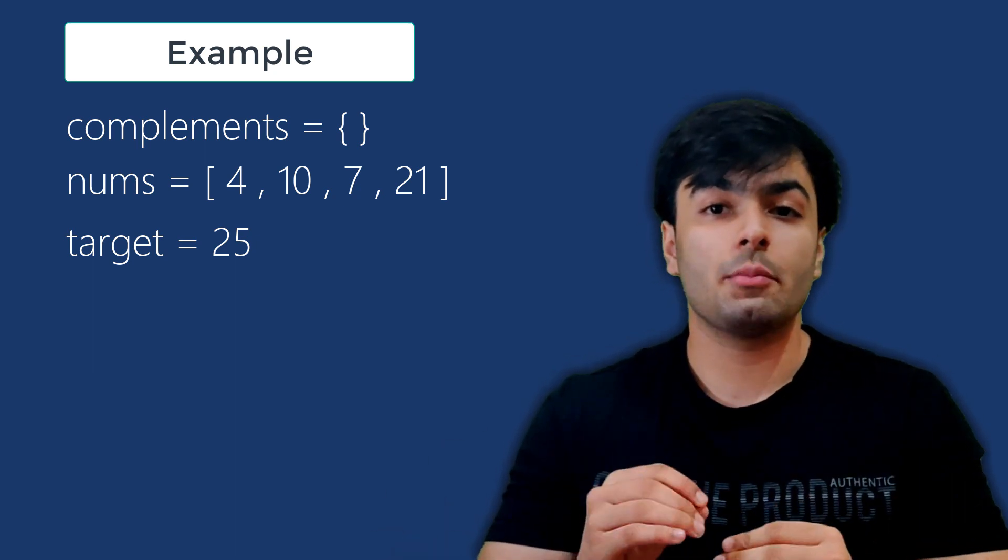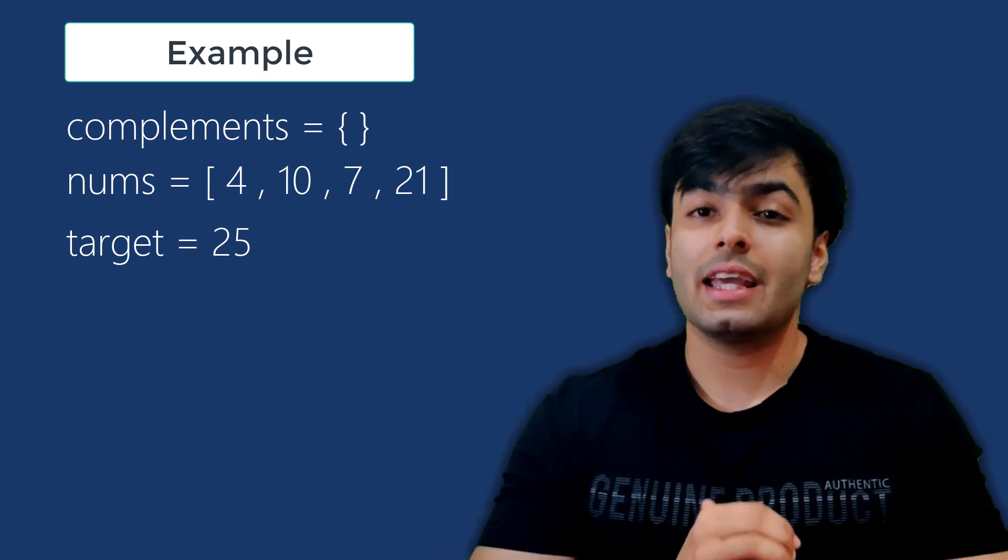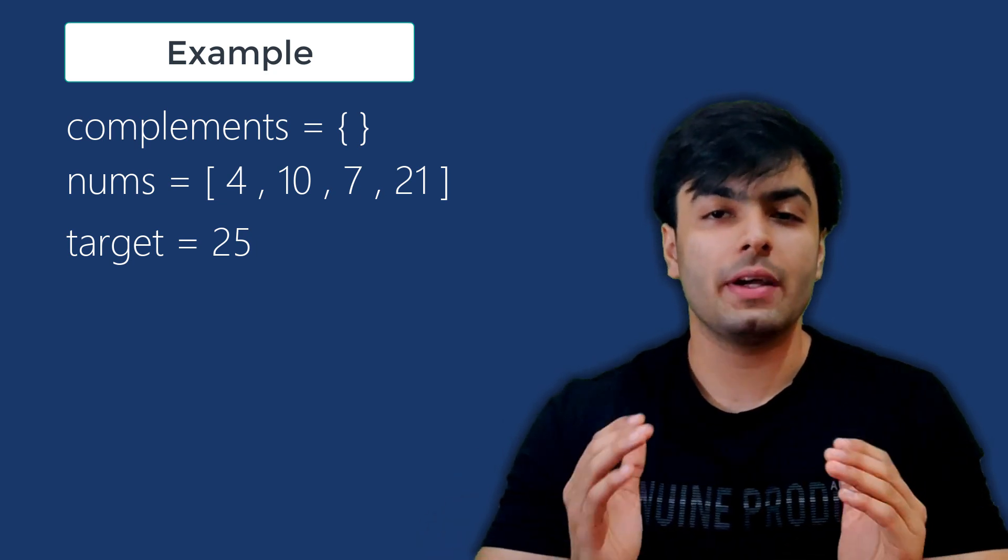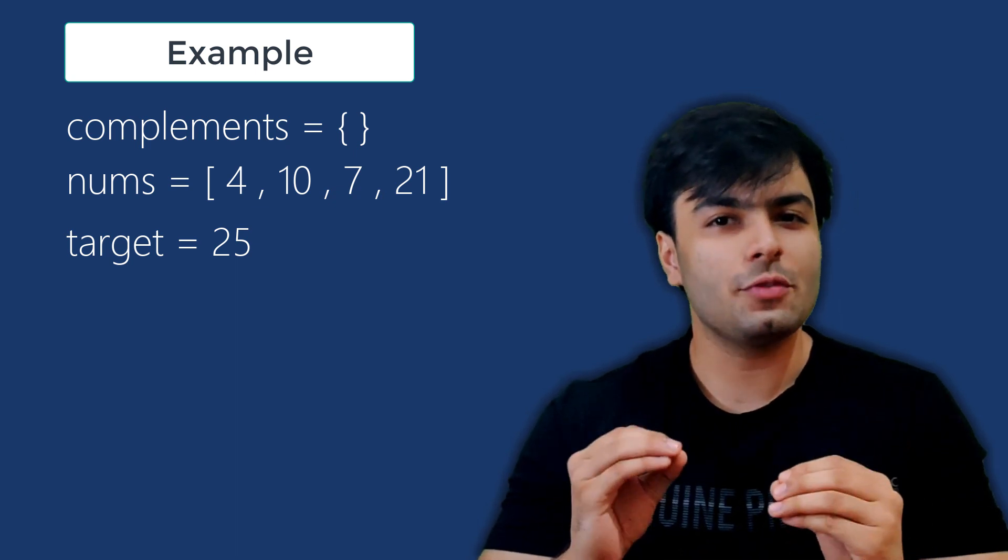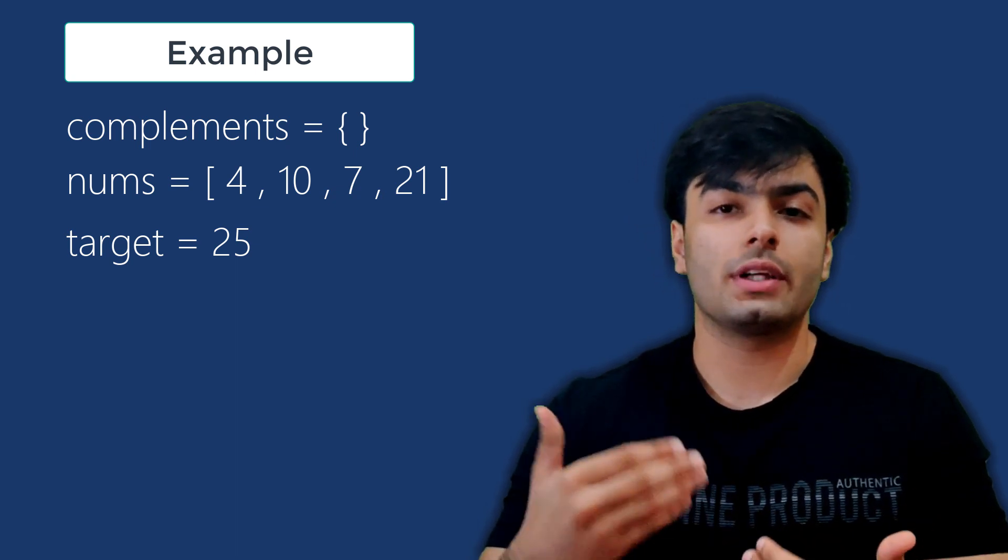If we do find the number to be a key in the dictionary, it means we have found a complementary pair and have both their indices. I know this is a bit confusing, so let's try this on our example.